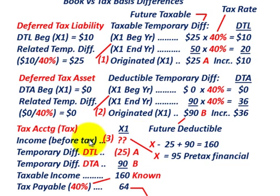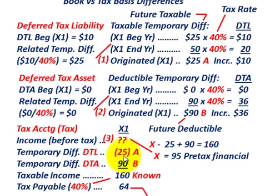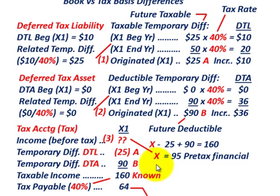The $90,000 deductible temporary difference is a future deductible amount — we're including it in income before taxes for the year. In the future, we've essentially prepaid the tax on this, so it's a future deductible temporary difference and we won't have to pay taxes on it in the future.